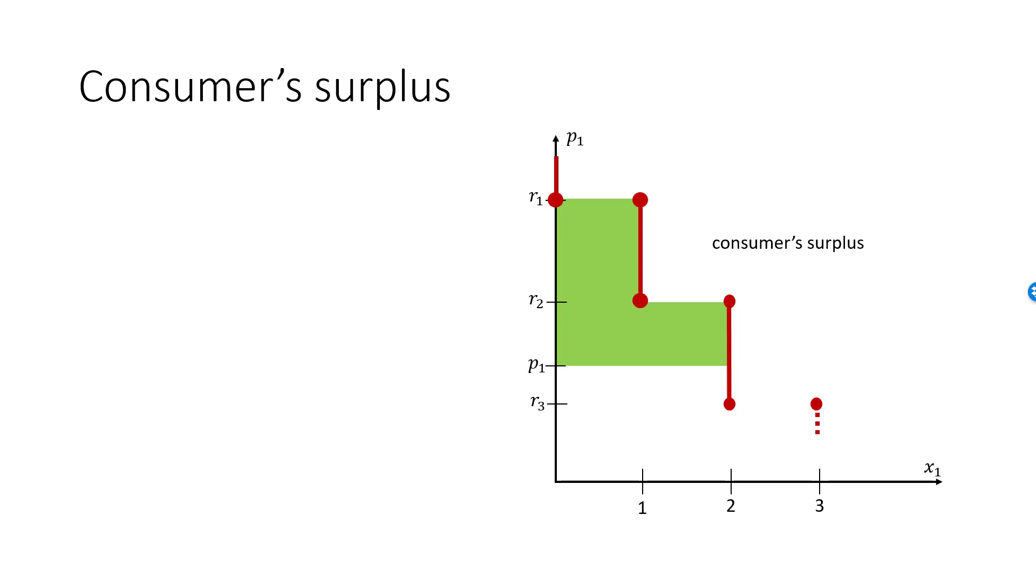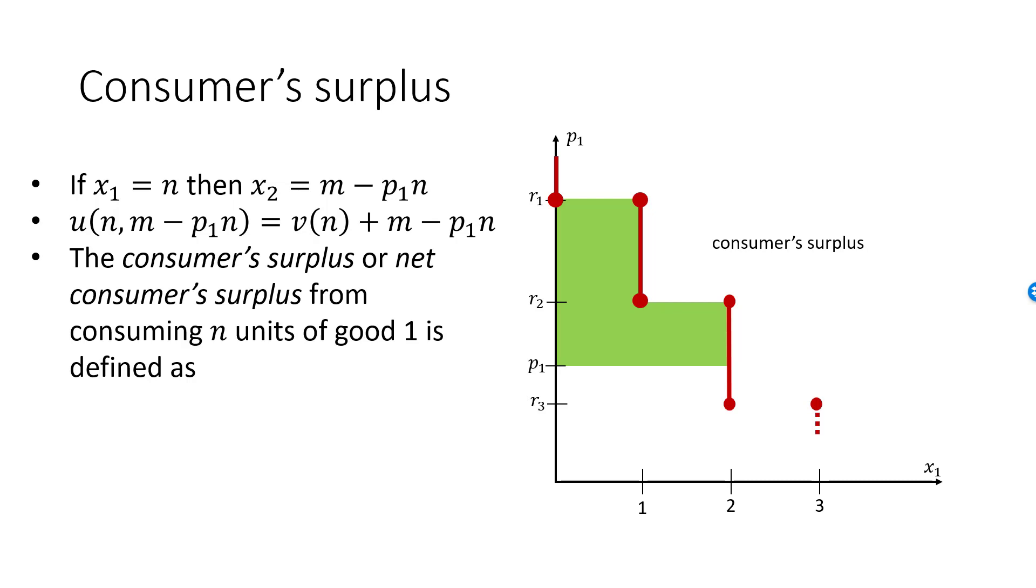Her total net surplus at price p1 is therefore this green area in between the demand curve and a horizontal line at p1. Let's make sense of this mathematically. If she consumes n units of good 1, then she is left with m minus p1n to spend on good 2. Since we have normalized the price of good 2 to equal 1, x2 equals m minus p1n. With quasilinear utility, the utility she receives from the bundle n, m minus p1n is v of n plus m minus p1n. Removing income from this expression, we have what is called the consumer surplus or the net consumer surplus from consuming n units of good 1.